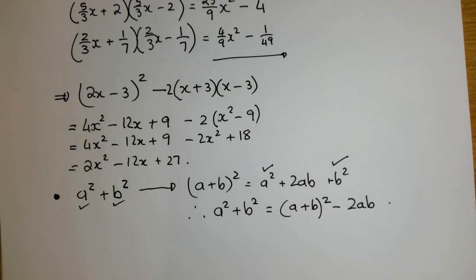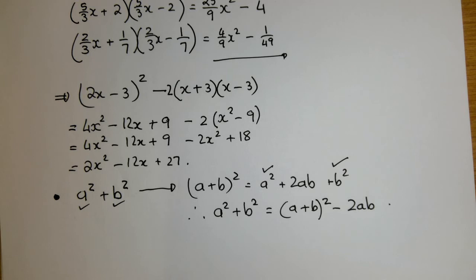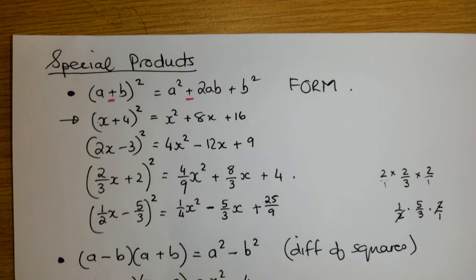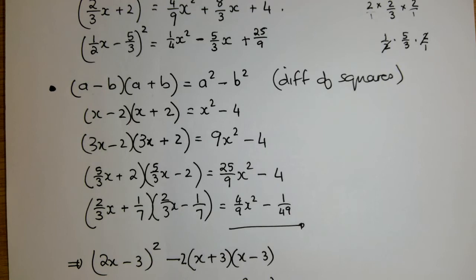So what is a squared plus b squared going to be? It's going to be the square of a binomial minus the middle term 2ab. So I just kept this on the one side. I kept that there and drew it over, threw it over.